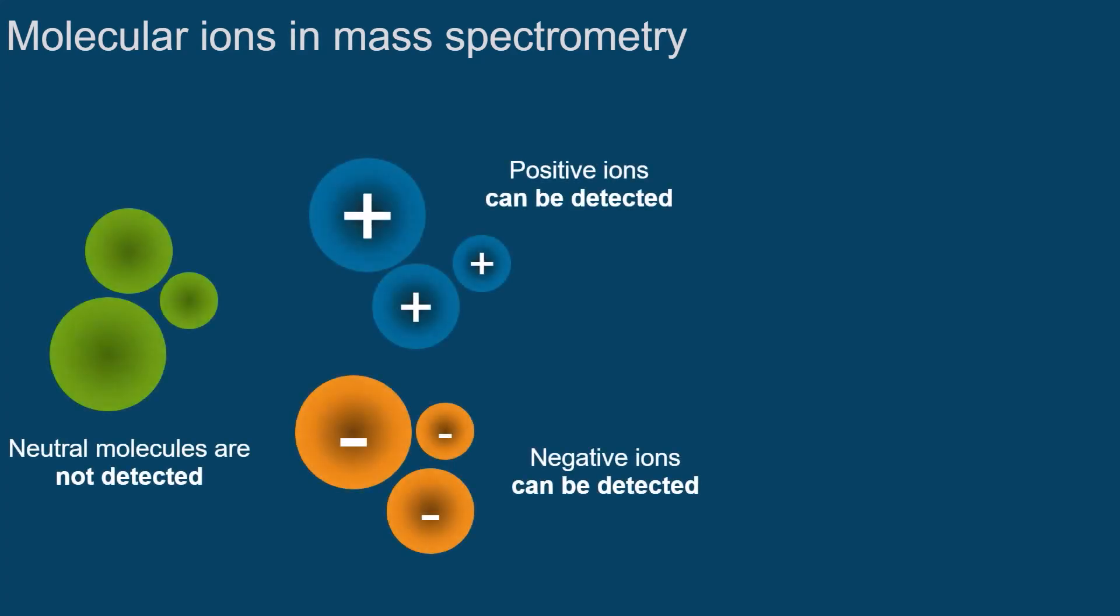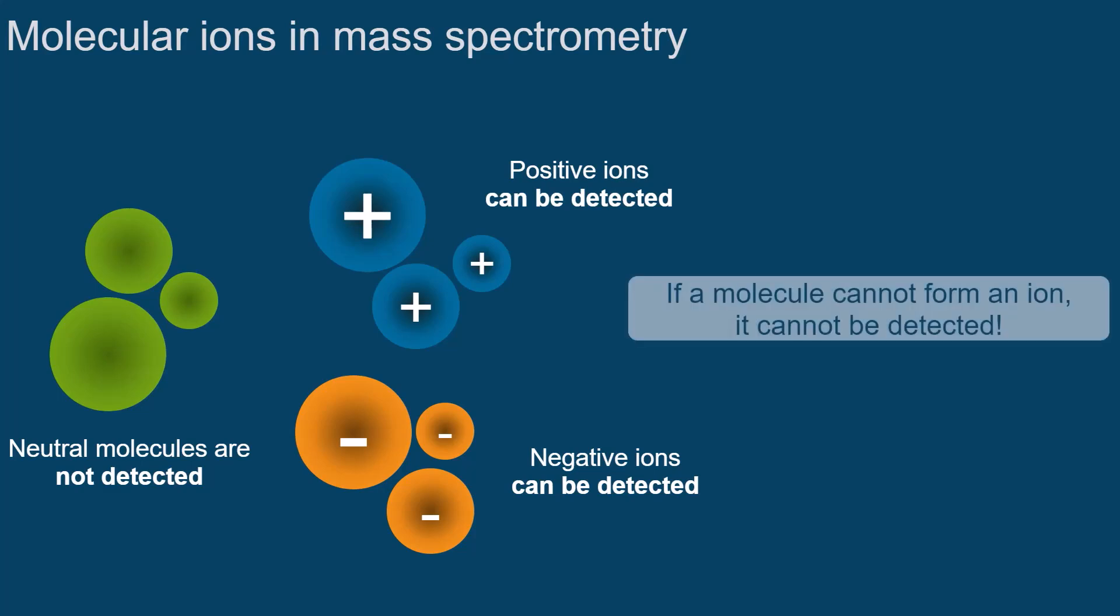A mass spectrometer actually detects ions, and not neutral molecules. This means that if a molecule cannot form an ion, it cannot be detected.